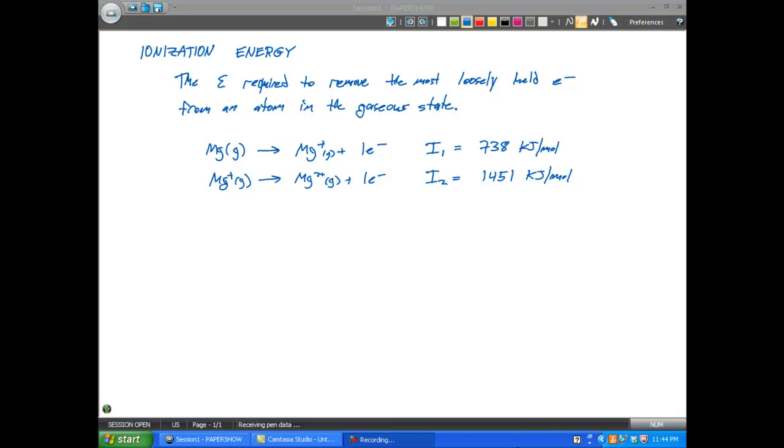Another thing to say is that each succeeding ionization is larger than the previous one. I n is going to be greater than I n minus one. And you can see here that when we remove one electron, it takes 738 kilojoules per mole. And to remove that second electron, it jumps up, it almost nearly doubles.